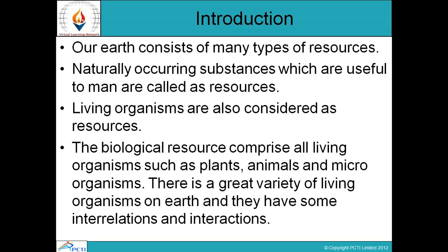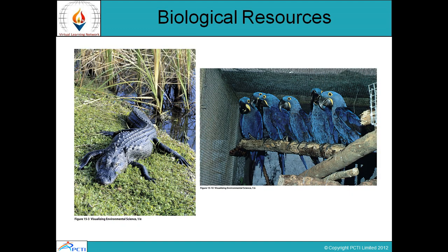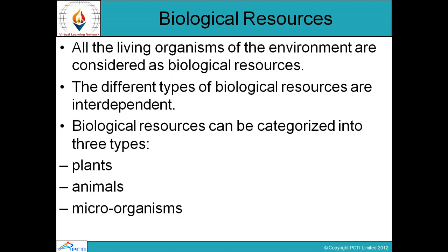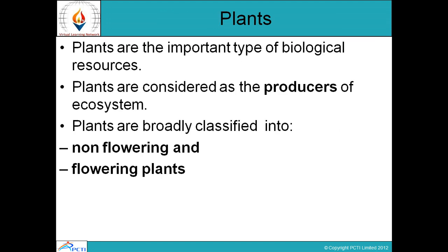There is a great variety of living organisms on earth and they have some interrelationship and interaction with each other — they are interdependent. One species' life affects another species' life. In biological resources, one is dependent on another, so if a species is going extinct, its effect comes on other species too. All living organisms of the environment are considered as biological resources, categorized into three types: plants, animals, and microorganisms.